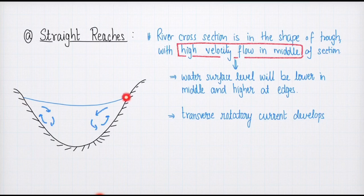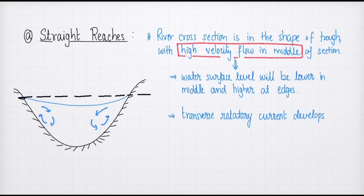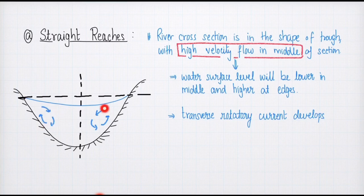Because of this trough shape, the level of water is lower at the middle portion. As a result of this behavior, transverse rotary currents are developed in these straight reaches.